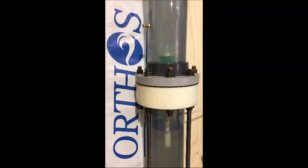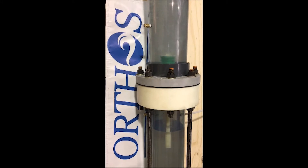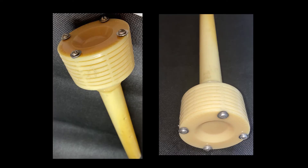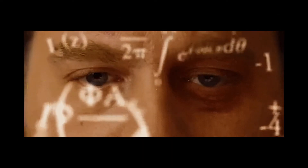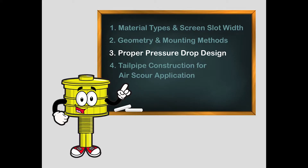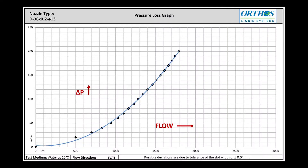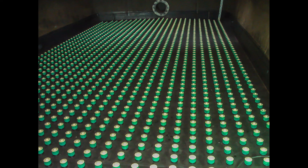R&D performed in our Orthos Research Center evolves new and improved nozzle products, while others still plug-and-chug mid-20th century legacy products in a one-size-fits-all manner. This video is part three of a four-part series regarding filter nozzle or strainer construction. Here I will discuss proper pressure drop design of nozzles in monolithic or steel plate under drains.